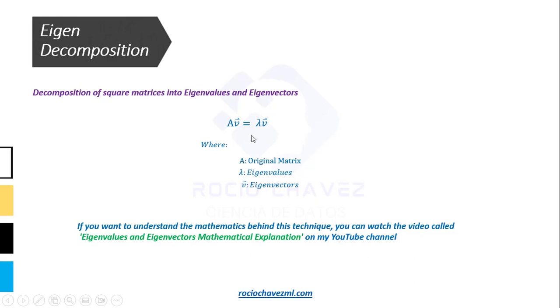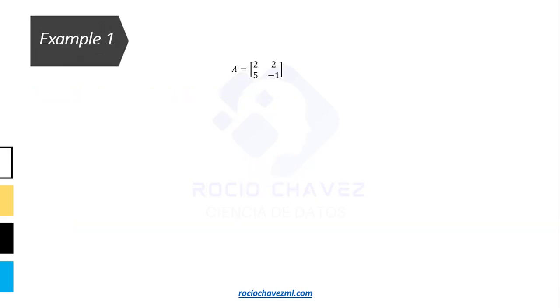As we can see in this formula, the eigenvalue tells us how much the length of the eigenvector changes when it is multiplied by a matrix. If you are interested in understanding the mathematics behind this technique, I invite you to watch a video called Eigenvalues and Eigenvectors Mathematical Explanation on my YouTube channel. In order to cover all the topics I mentioned at the beginning of this video, we will look at two examples.